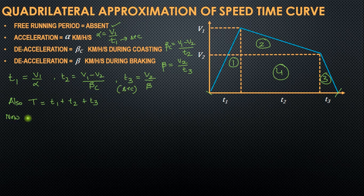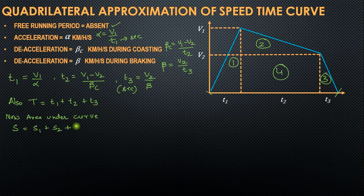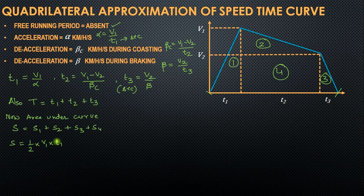The area under the curve equals the distance travelled, S. So S = S1 + S2 + S3 + S4, where S1 is the area of triangle 1, S2 the area of triangle 2, S3 the area of triangle 3, and S4 the area of rectangle 4. S1 = ½ × V1 × T1, but since T1 is in seconds and V1 is in km/h, we divide by 3600 to convert to km per second.